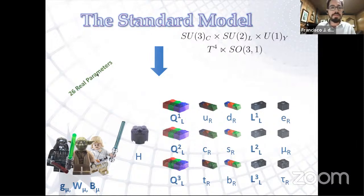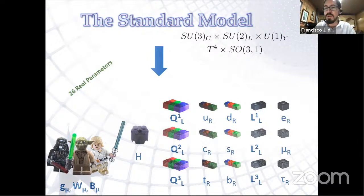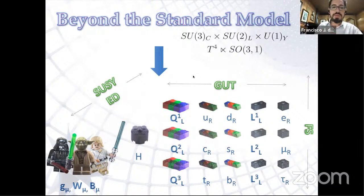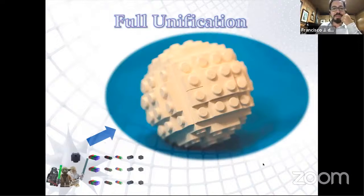To be fully defined, the Standard Model needs 26 real parameters — that's a lot of information. I want to make it smaller and more elegant. The way we do that is by going beyond the Standard Model and enlarging the symmetries — either the gauge symmetry or the Poincaré symmetry. Through flavor symmetries, GUT unification, SUSY, and extra dimensions we paste legos together. The question is: can we paste everything into one big, very symmetrical lego? That is the aim of this talk, and the way to do it is through the exceptional chain.